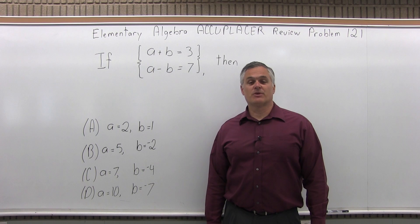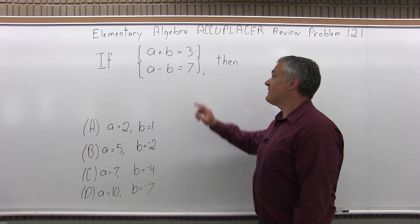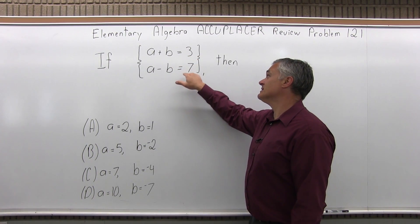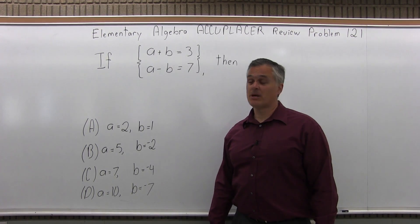This is the Elementary Algebra Accuplacer Review, Problem 121. It says if A plus B is 3 and A minus B is 7, then you have four options for what A and B might be equal.